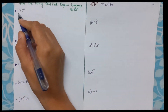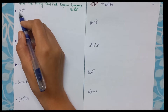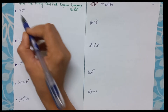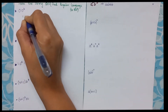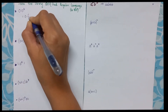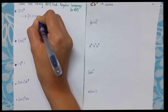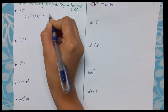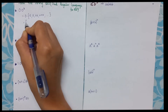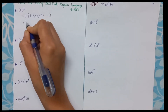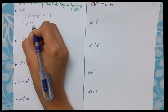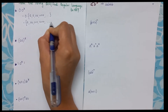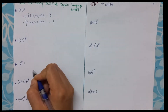Consider if I have the regular expression as 0·0*. Now 0 combined with epsilon will give me only 0, then 00, 000, four zeros, and so on. So this will be the string set.